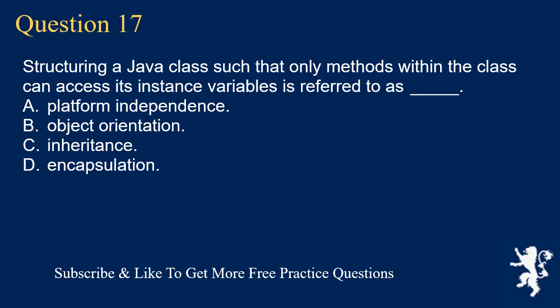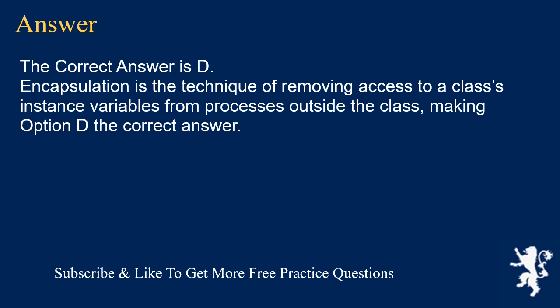Question 17: Structuring a Java class such that only methods within the class can access its instance variables is referred to as what? A) Platform independence, B) object orientation, C) inheritance, D) encapsulation. The correct answer is D. Encapsulation is the technique of removing access to a class's instance variables from processes outside the class, making option D the correct answer.